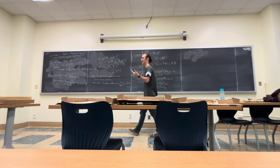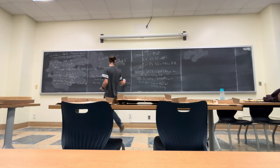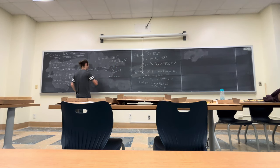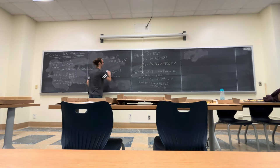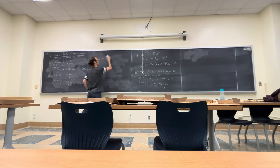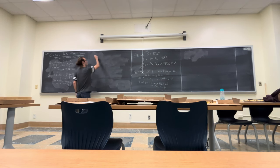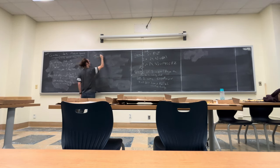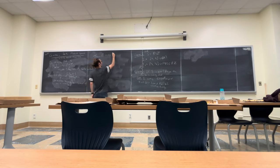So we have open dense sets win, and countable diagonal intersections of open dense sets win. That means we have every comeager set wins. Anyone want to make a wild guess? Here's the theorem: P2 wins if and only if S is comeager.